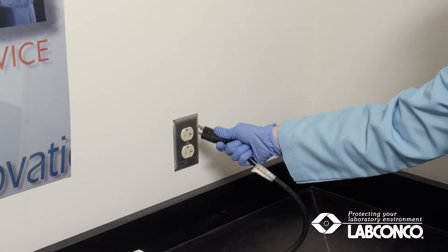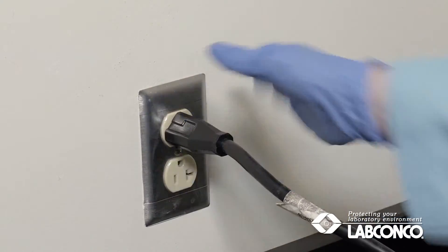Now plug the power cord into the wall receptacle and your RapidVap is ready to use.